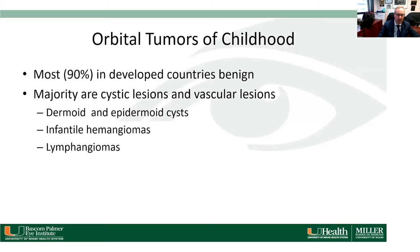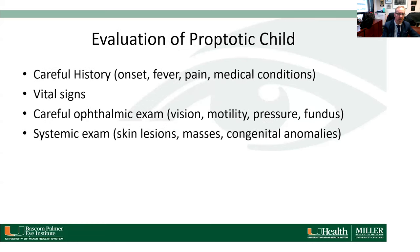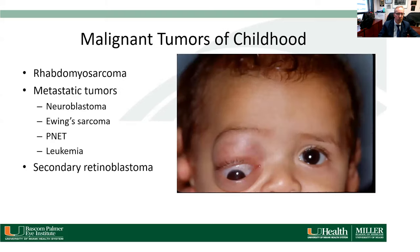Most orbital tumors of childhood in developed countries are benign — the majority are cystic lesions and vascular lesions. When we evaluate a child who has proptosis, we have to take a careful history with vital signs, do a careful eye exam, and of course a systemic exam looking for skin lesions, masses, and congenital anomalies.